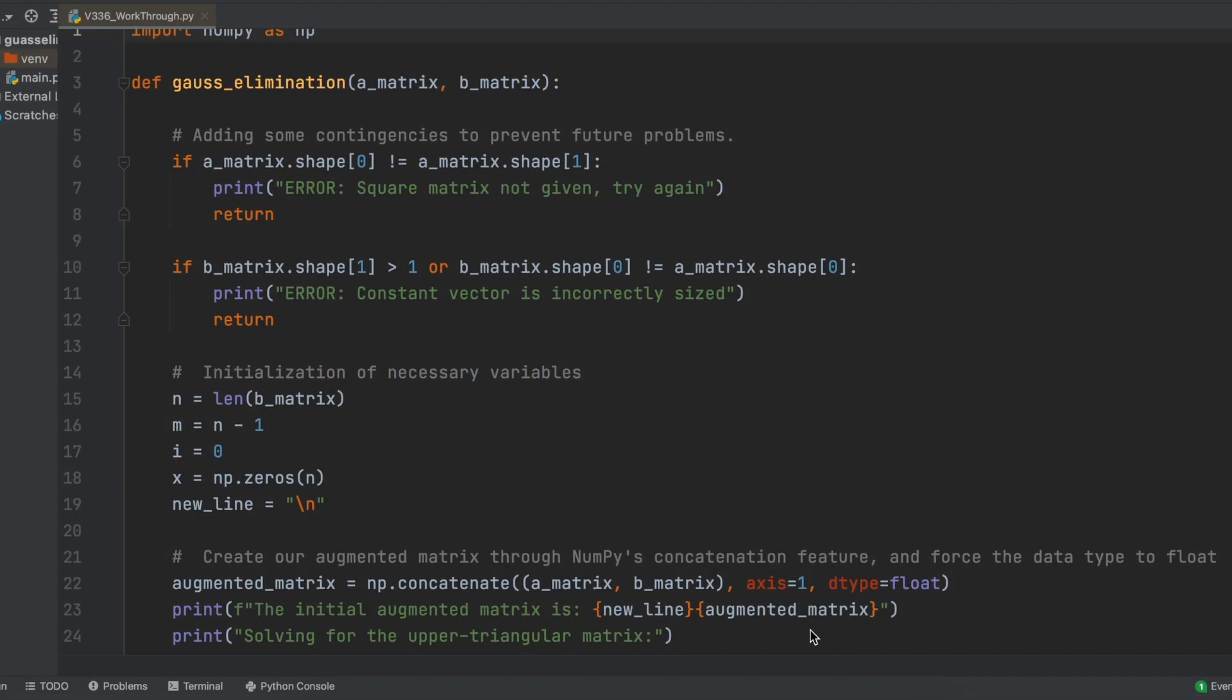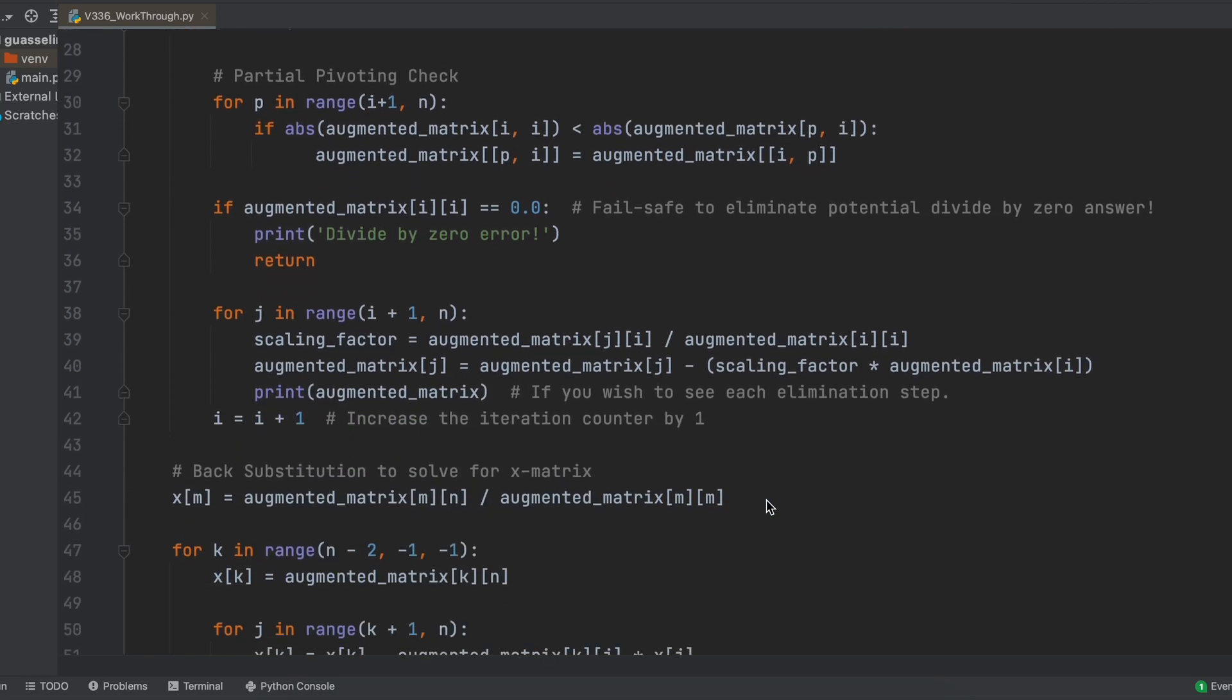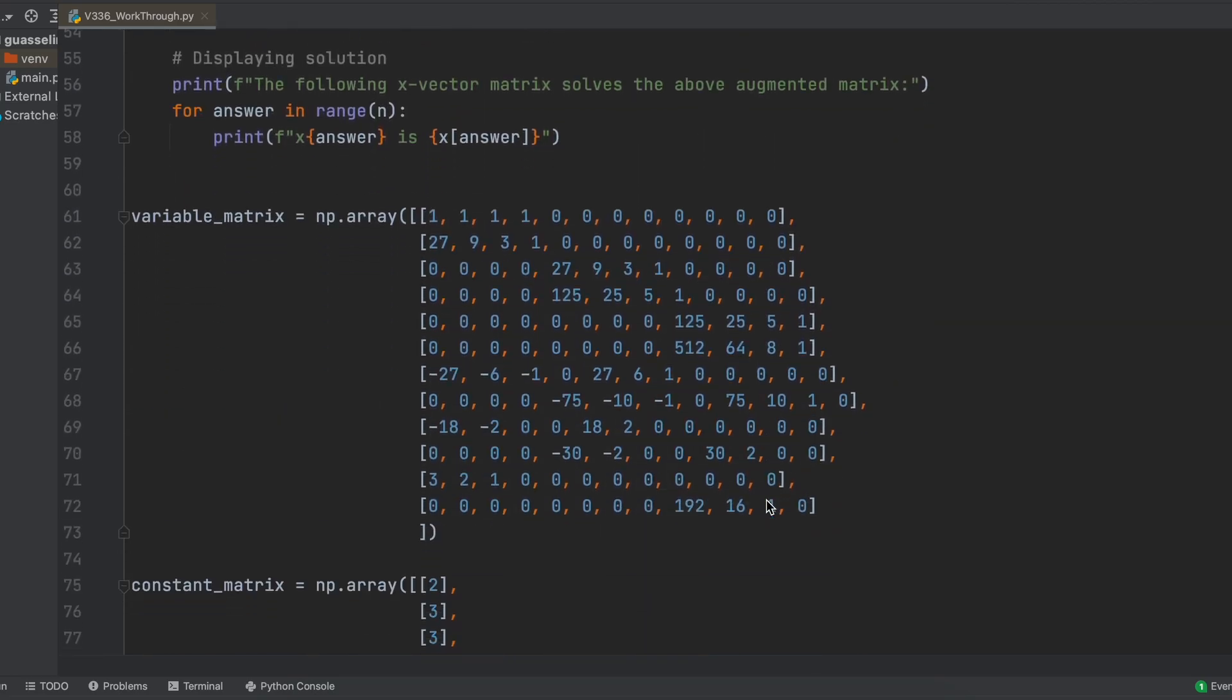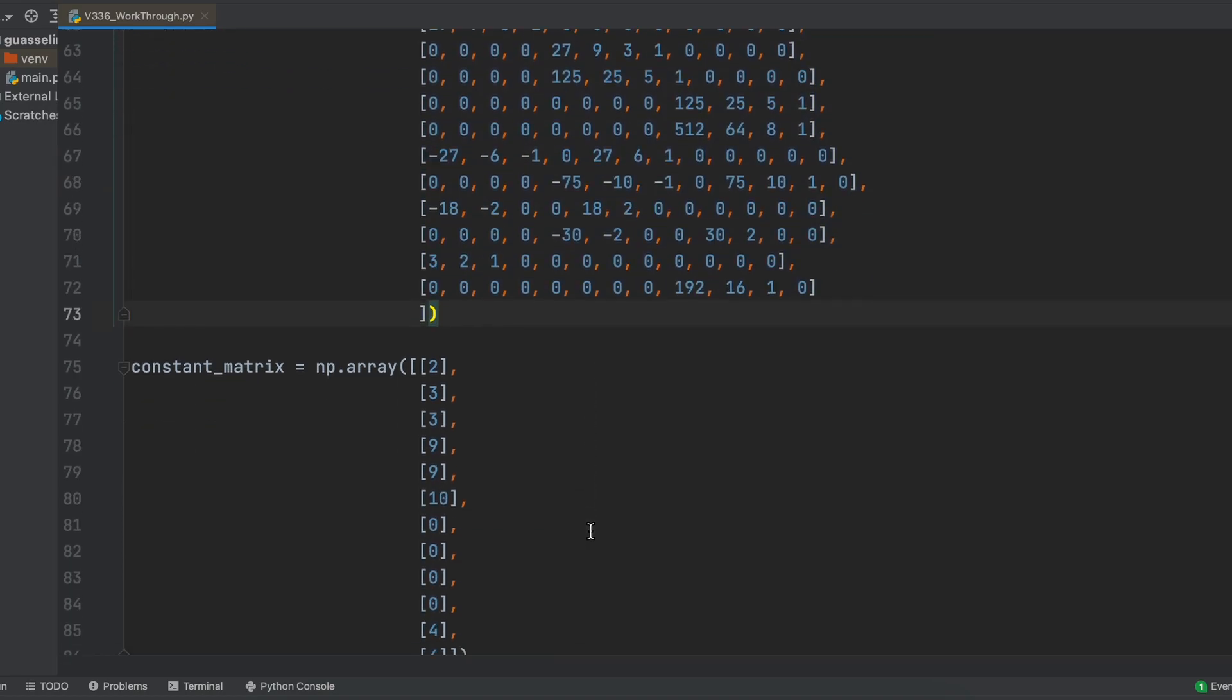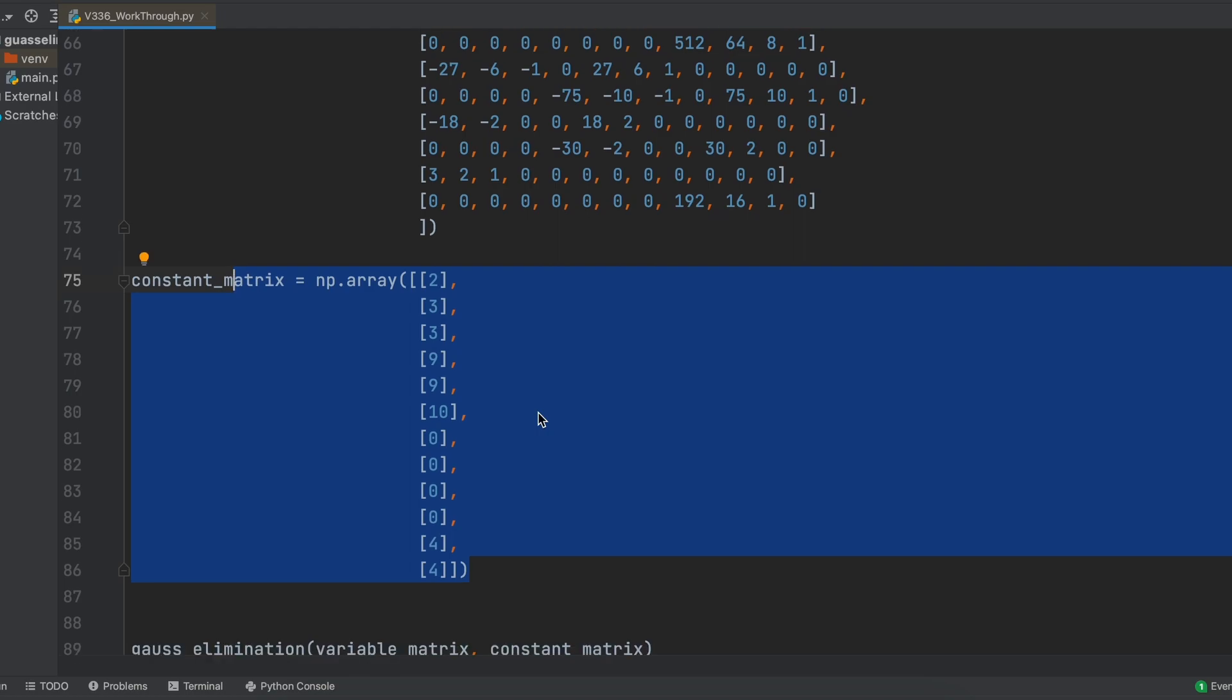Now that we are inside Python, I have opened the gauss elimination system of equation solver with partial pivoting. I took a minute already and entered our square matrix we just wrote down and entered it into our variable and constant matrices here. Now, we just need to call our function and insert our variable matrix, and then our constant matrix, and run the program.